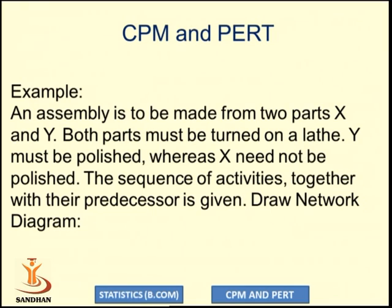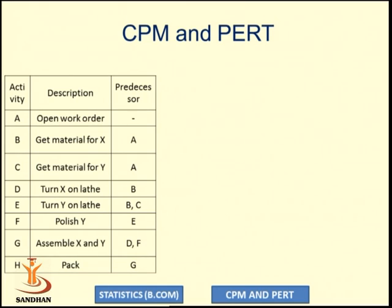Now let us see examples of drawing the network. Suppose we have to assemble a product made from two parts X and Y. Both parts must be turned on a lathe, but Y must be polished while X need not be polished. Activity A is 'open the work order,' B is 'get material for X,' C is 'get material for Y,' D is 'turn X on lathe,' E is 'turn Y on lathe,' F is 'polish Y,' G is 'assemble X and Y,' and H is 'packing of the product.'